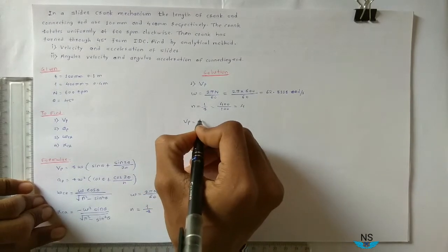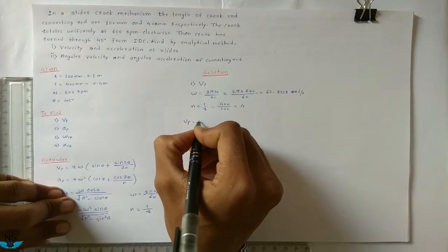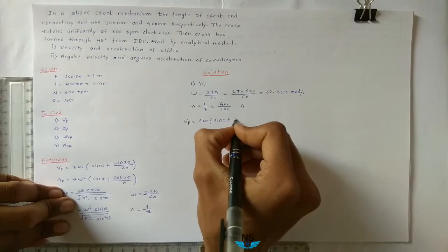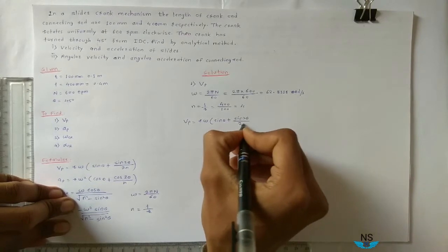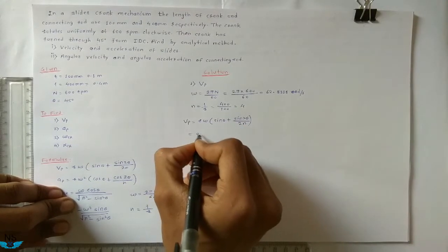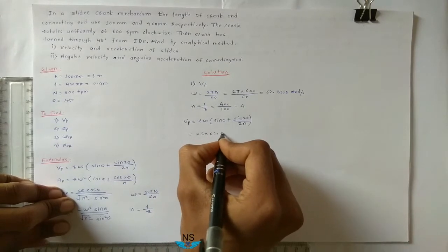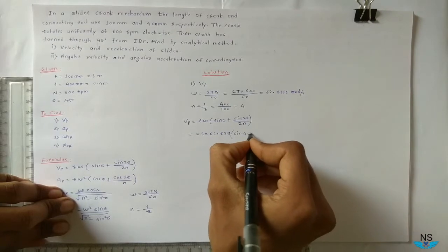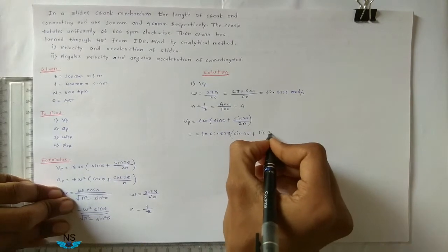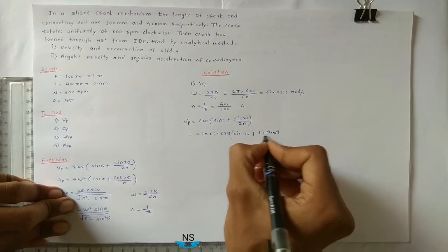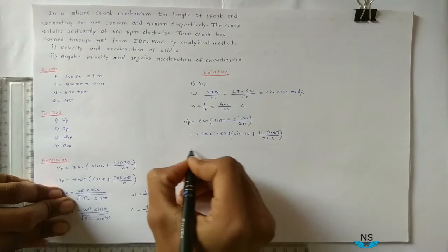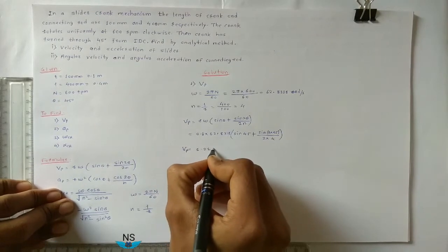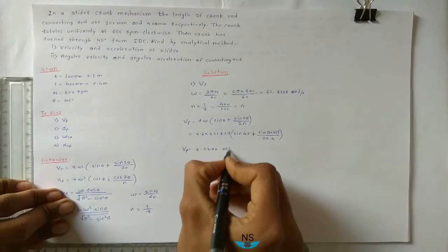Velocity of piston: Vp equals R·ω·(sin θ + sin 2θ / 2n) equals 0.1 × 62.8318 × (sin 45° + sin 90° / (2 × 4)). So Vp equals 5.2282 m/s.